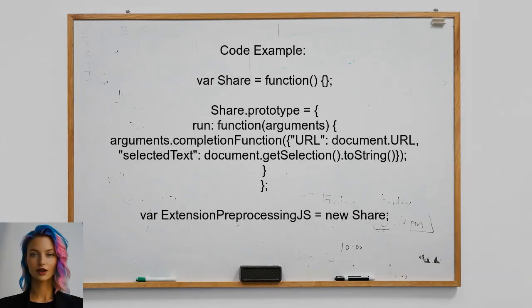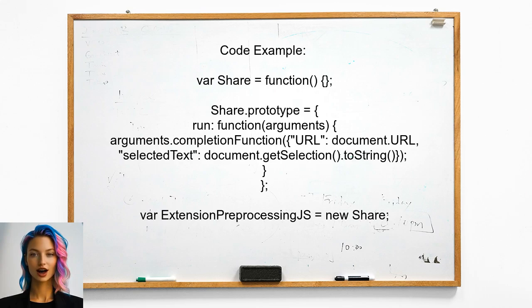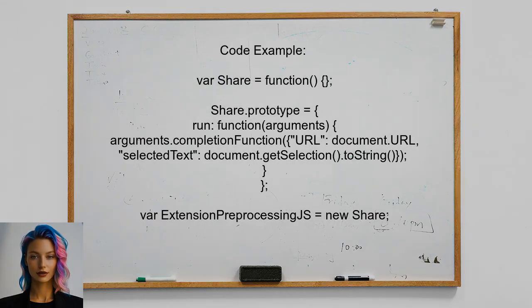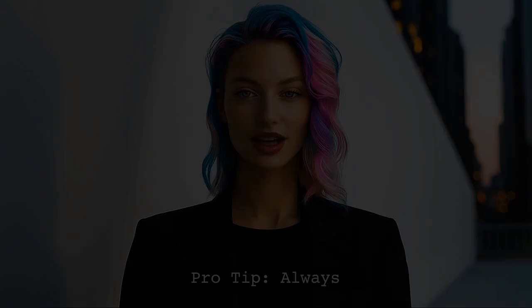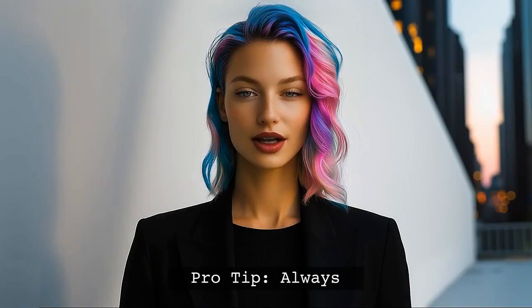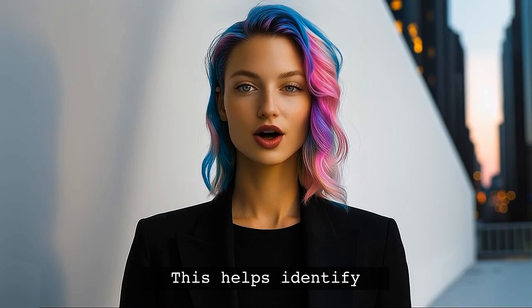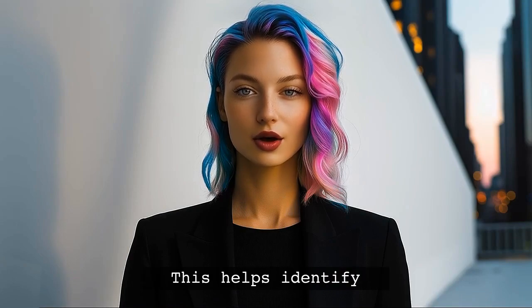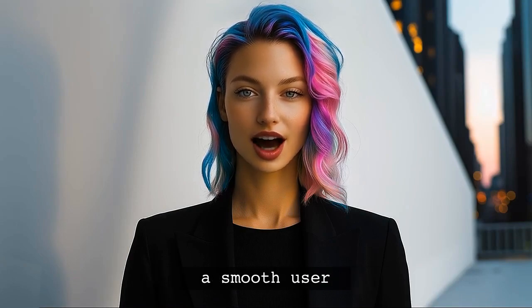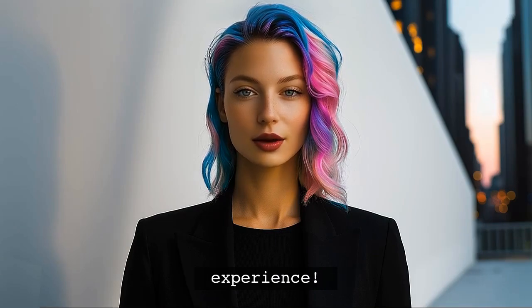The user provided a code snippet for the JavaScript file that runs when the share icon is used. This code captures both the URL and the selected text, allowing for a more complete sharing experience. Here's that pro tip I promised: always test your share extension with different types of content — this will help you identify any issues and ensure a smooth user experience.